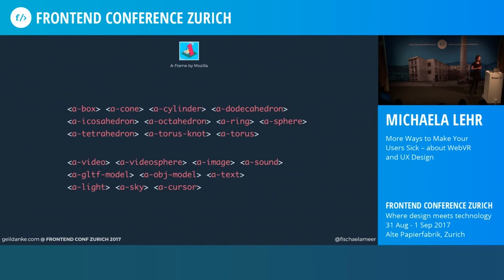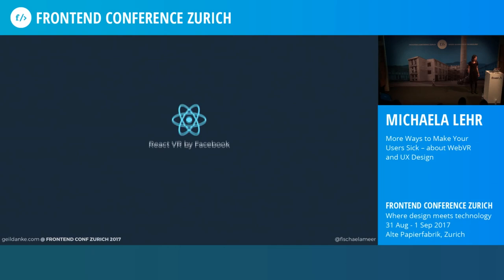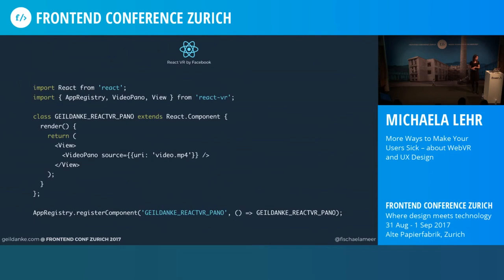React VR by Facebook also tries to reduce the effort of writing WebGL and WebVR. Like A-Frame, it is built on top of Three.js and the WebVR polyfill, but it relies on the concepts of React.js and React Native. Instead of writing HTML, you write JavaScript and JSX. React VR already includes a video panel component with a source property to locate and display video in the WebVR scene, nested in a view component that provides support for touch input, layout features, and styling. React VR also provides predefined components for VR applications — geometric forms, lights, and a VR button that normalizes click and gaze events for headsets that don't support clicks.